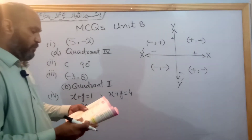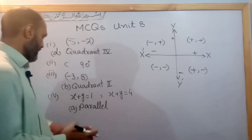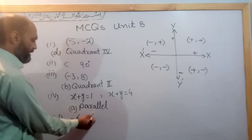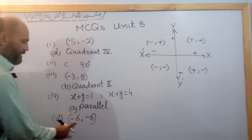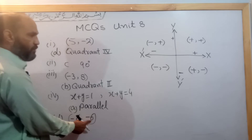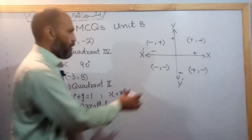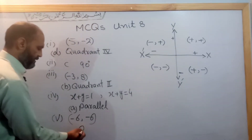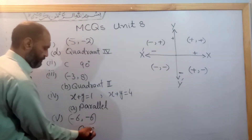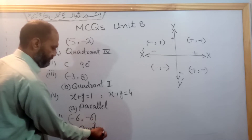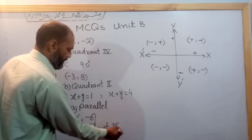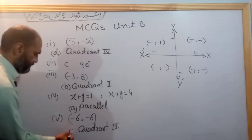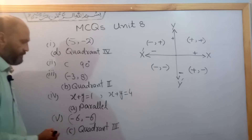Question number five: the point (-6, -6) is located in which quadrant? The x-coordinate is negative and the y-coordinate is also negative. Both coordinates are negative, so this point lies in the third quadrant. The answer is quadrant 3, option C.